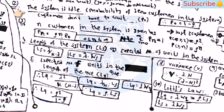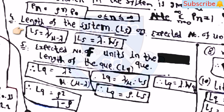Probability of zero customers in the system: P₀ = 1 − ρ. Probability of n customers: Pₙ = ρⁿ · P₀, for 0 ≤ n < ∞. Note: Σ(n=0 to ∞) Pₙ = 1. Expected number of units in the system: Ls = λ / (μ − λ), and Ls = λ · Ws.